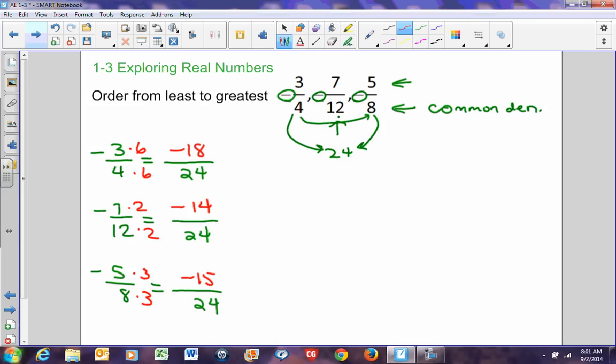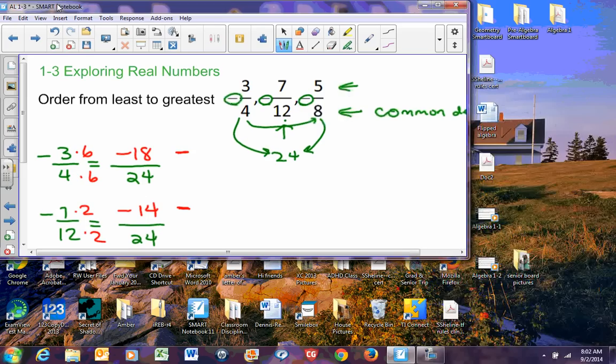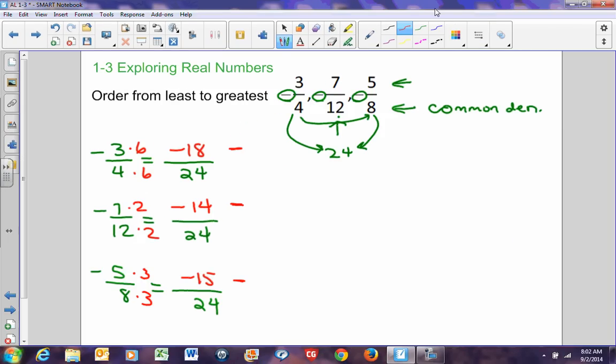Now, I simply look at my numerators. I have negative 18, I have negative 14, and I have negative 15. If we think of a number line, the number that's furthest to the left on the number line is negative 18. So, this is the smallest number, this is the second smallest number, and this is the biggest number.